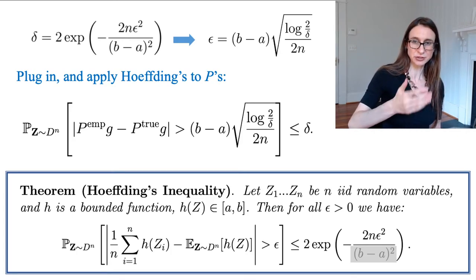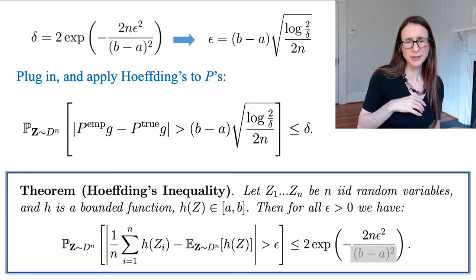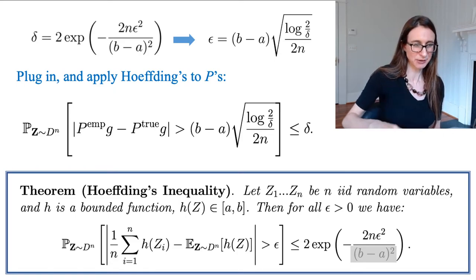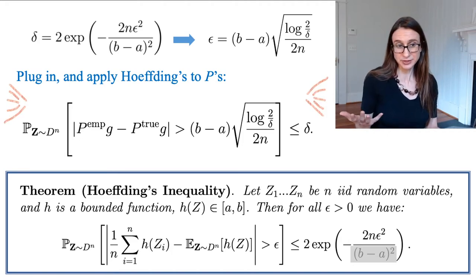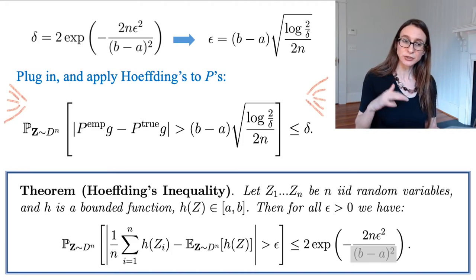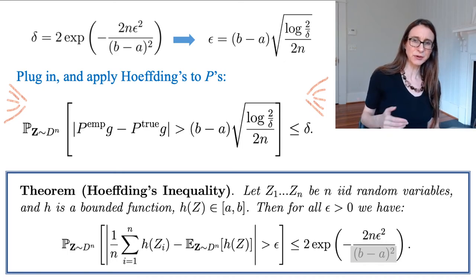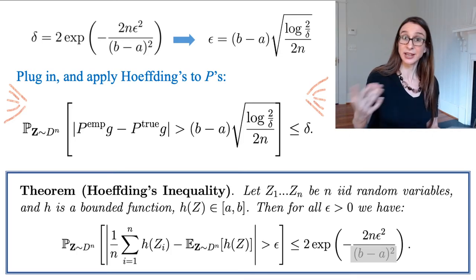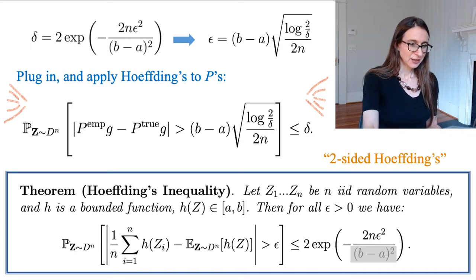So what I get is that the probability that something bad happens, which is that the empirical risk and true risk are greater than that thing apart, that probability is less than delta. It's small. So this is our first kind of bound on the difference between the true and empirical risks. So this is our first kind of inkling of how to bound generalization error. Again, generalization error is the difference between training and test error.